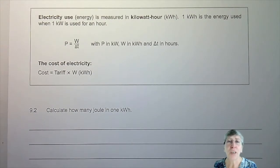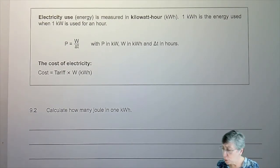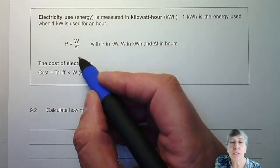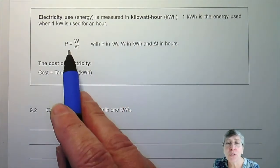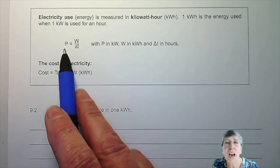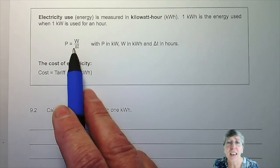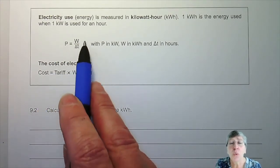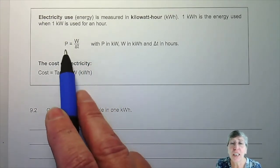Good morning everyone. Today we are looking at electricity use. You will remember this equation P equals W over delta T. We've talked about power yesterday and now we are going to use that one.